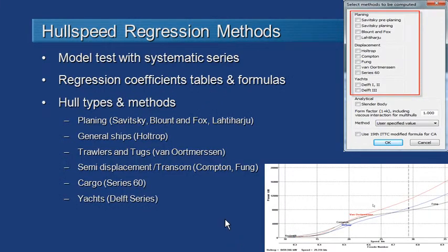The regression methods in Hull Speed are typically based on model tests with a systematic series of hulls of similar type. The authors of these papers have done a statistical regression analysis and come up with a series of coefficients, tables and formulas to predict the resistance of the vessel based on some key parameters.